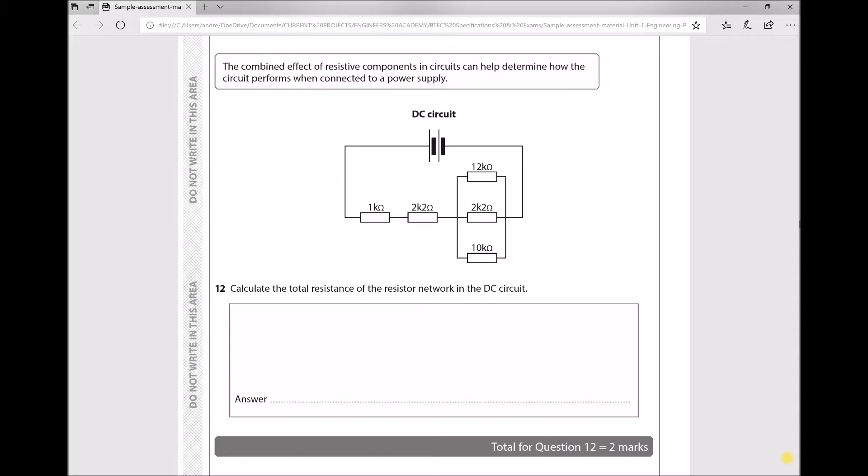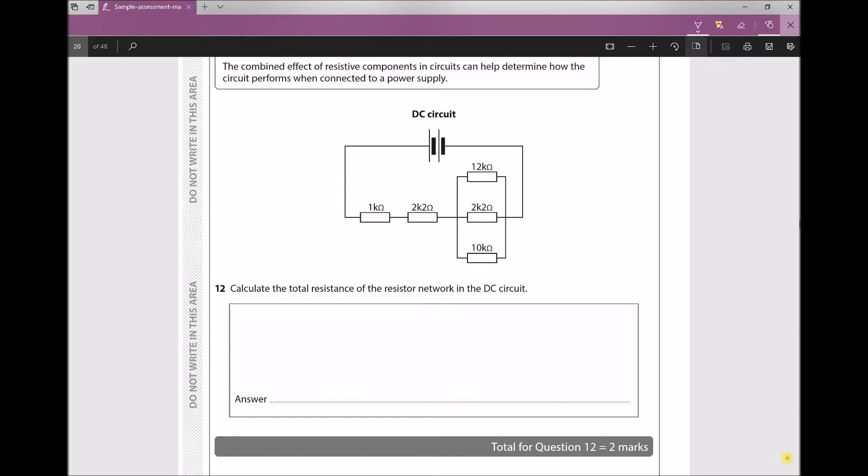Now when we approach this question, the first thing that we're going to do is we're going to take our parallel resistors, which is this block here, and we're going to determine the single resistance that would replace those three resistors.